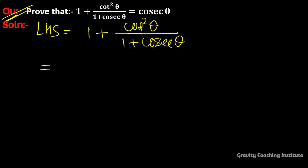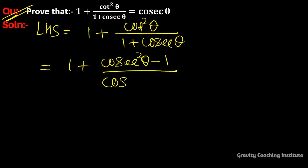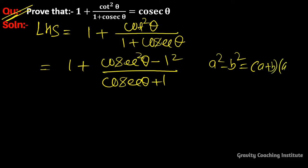We use the identity cot²θ = cosec²θ - 1, so we can write cosec²θ - 1 in the numerator. This factors as (cosecθ + 1)(cosecθ - 1) using the algebraic identity a² - b² = (a + b)(a - b).